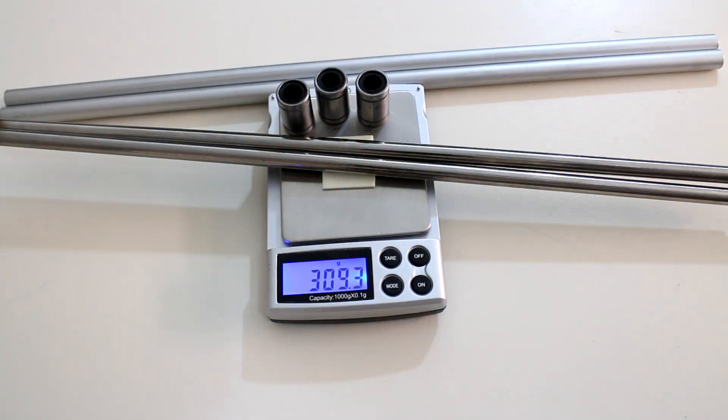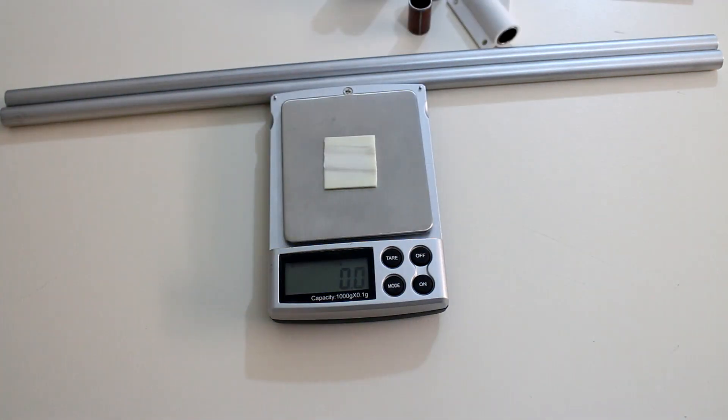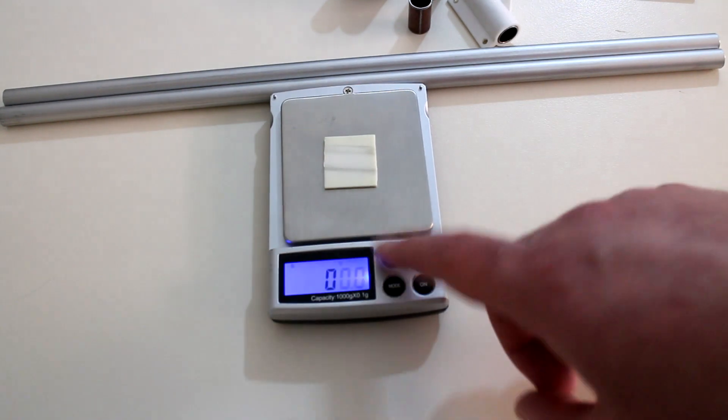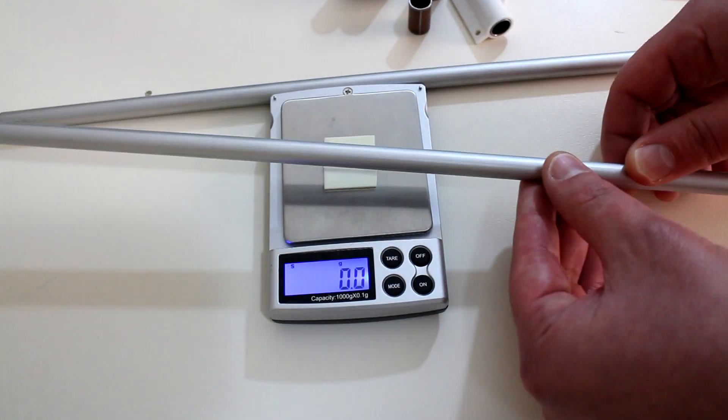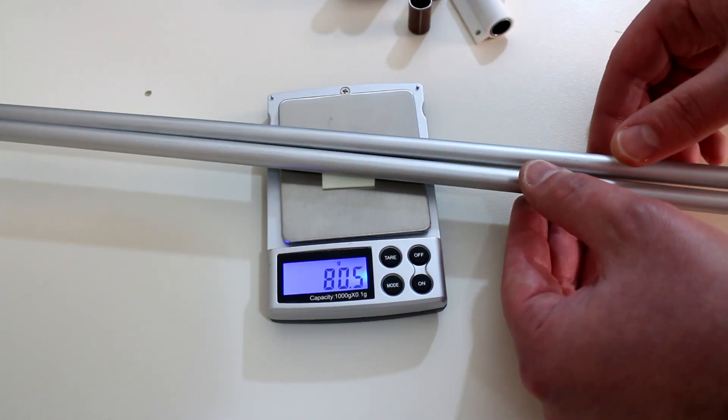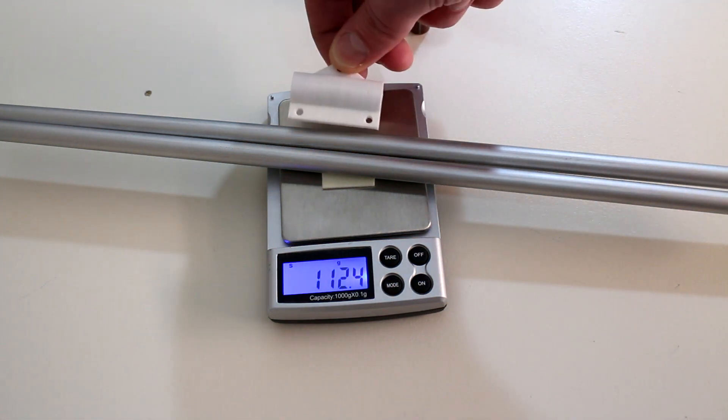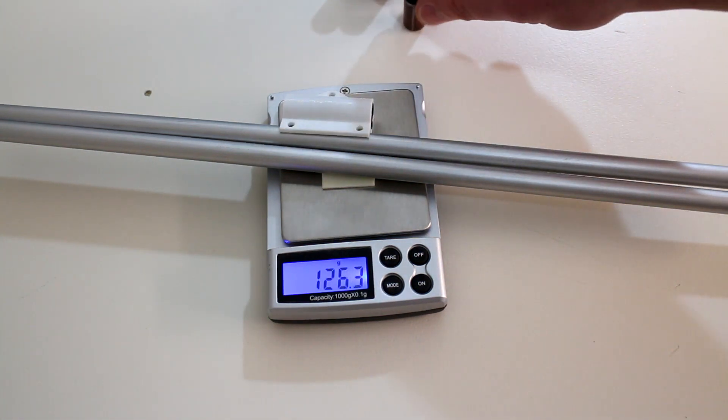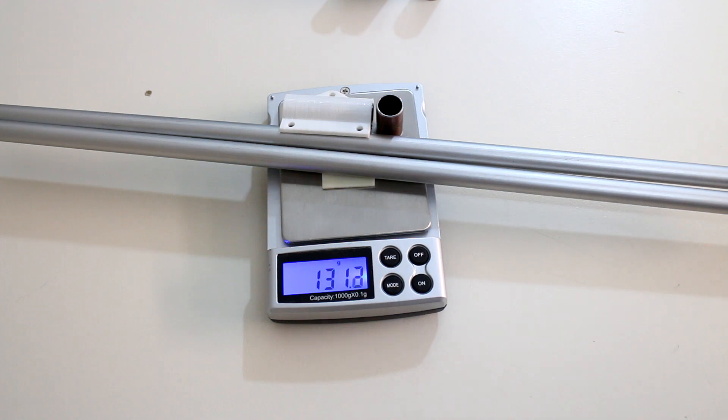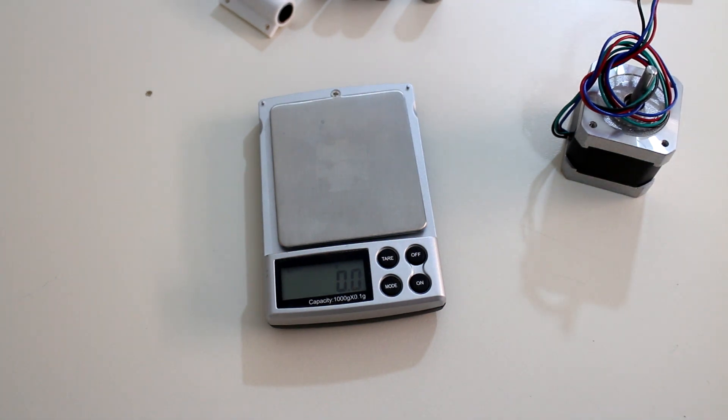Switch over to the aluminum rods. Tare out the scales, put on the first length, the second length - 112.5. We'll introduce one of the constrained double bushings and a single bushing - we're looking at 131.4 grams. So that's a weight saving of 183 grams.